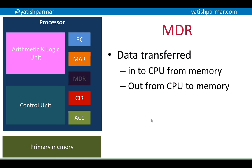Then we've got the memory data register. Data is transferred into the CPU from memory or transferred out from the CPU to memory. All data and instructions are in binary, so the CPU can't distinguish between data and instructions. When you're looking at assembler you're reading mnemonics, but the CPU handles everything in binary. The memory data register is the only route into the CPU, after which it is determined which register the data actually needs to go into.